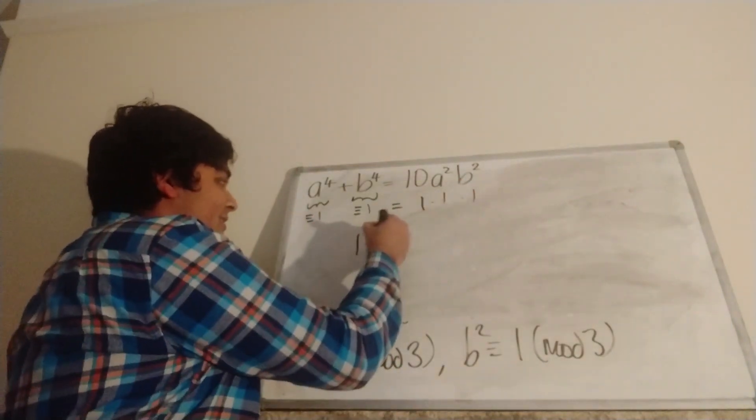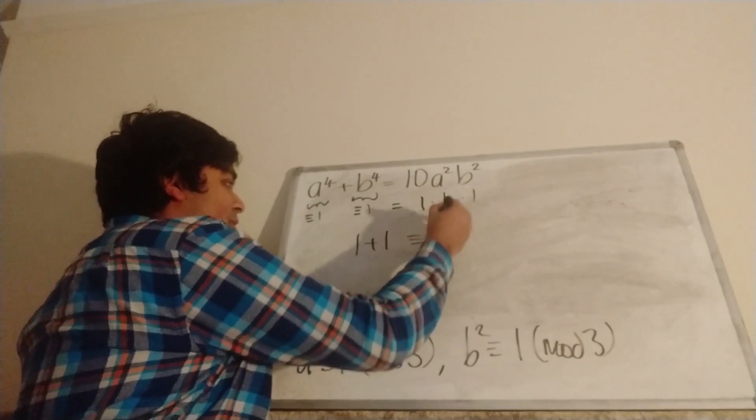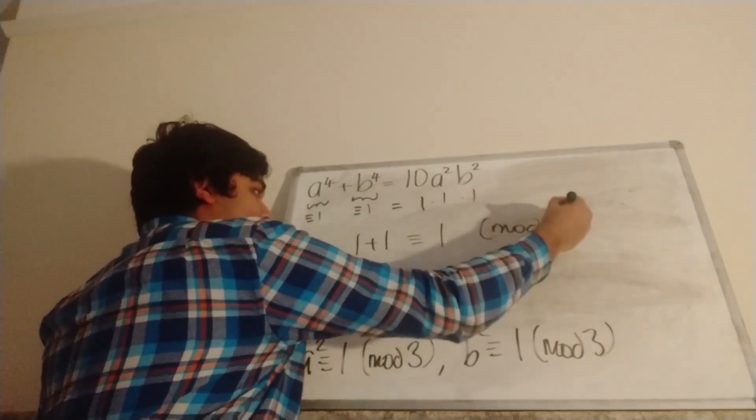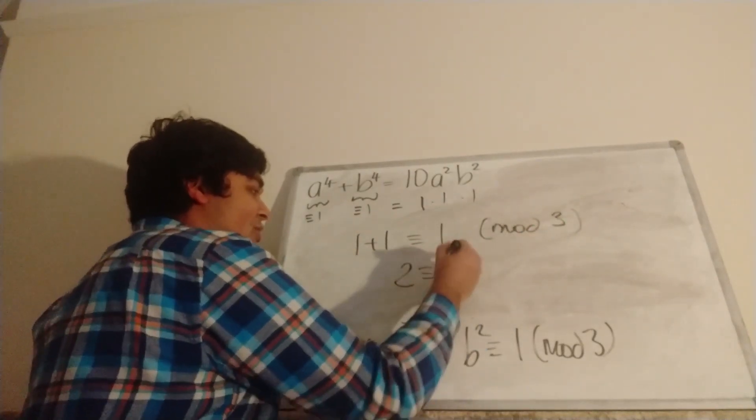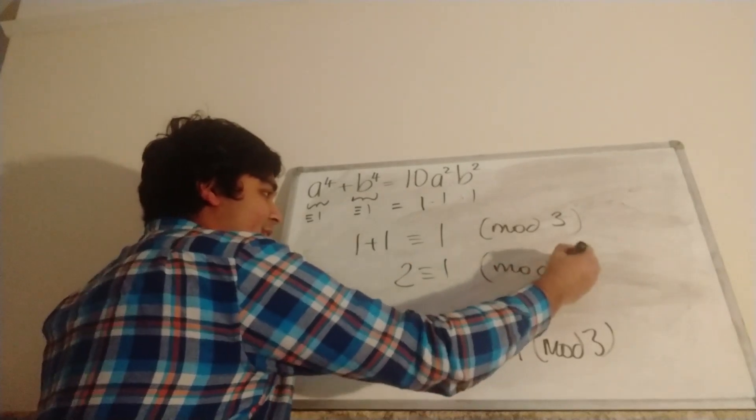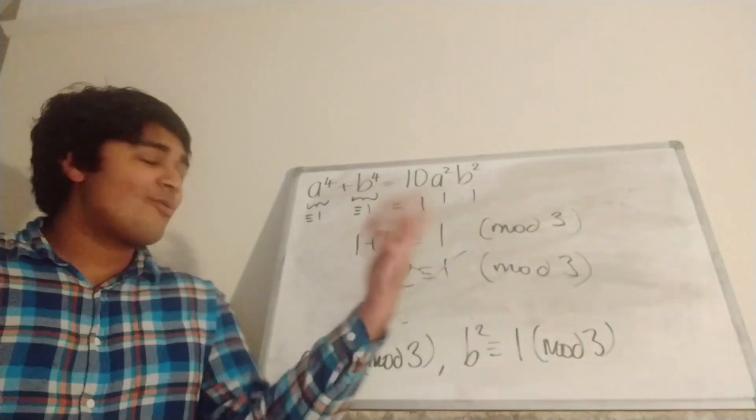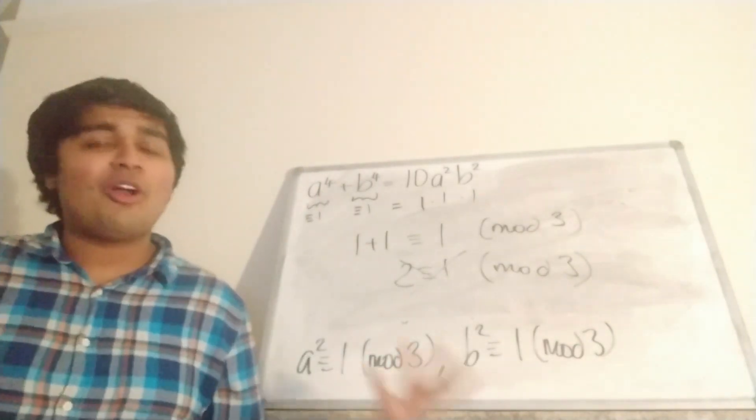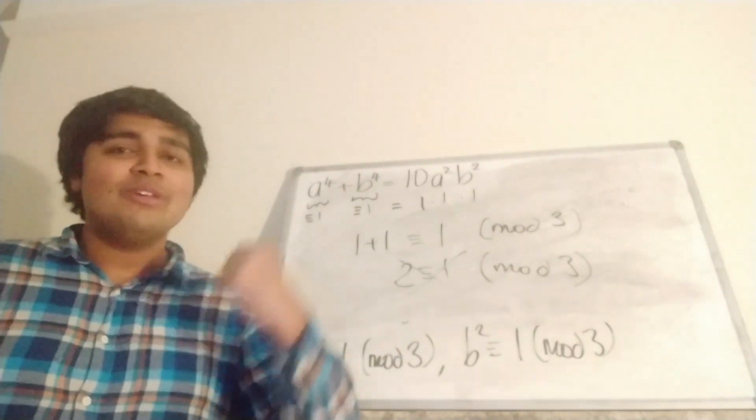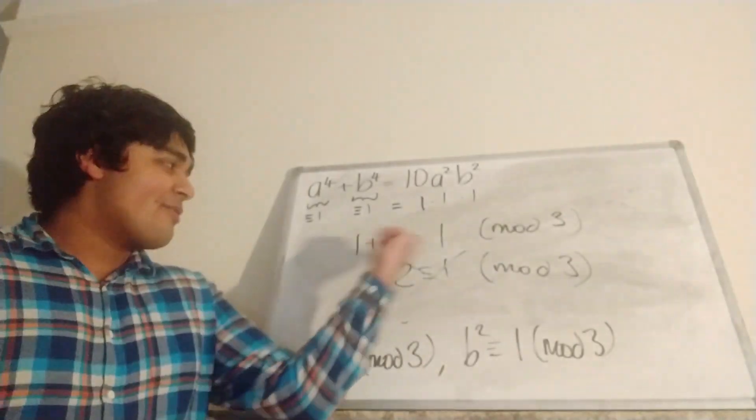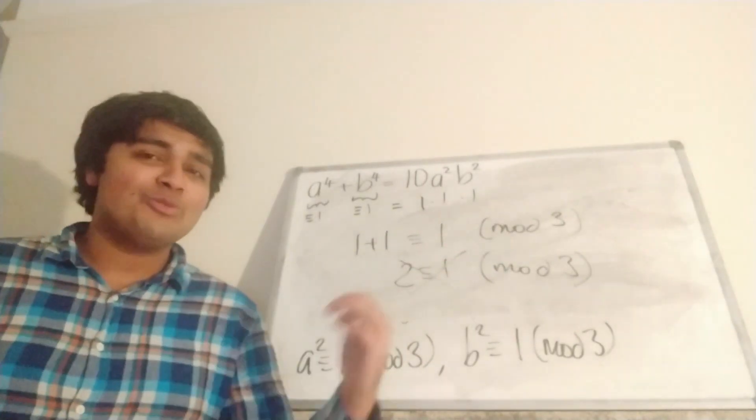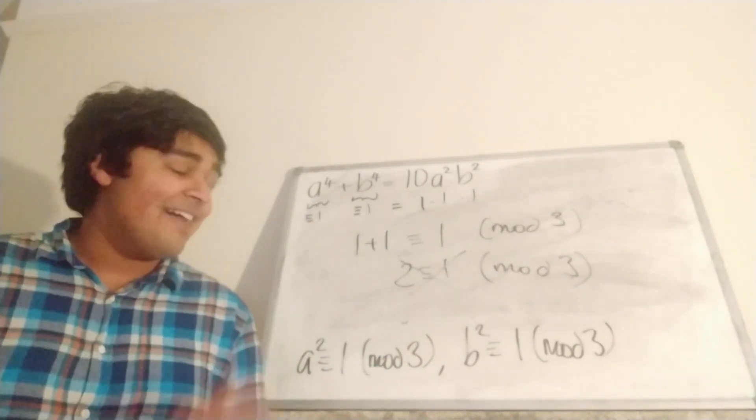So we have on the left-hand side, 1 + 1 is congruent to 1 mod 3, but of course then we get that 2 is congruent to 1 mod 3, and this is certainly not true. So we arrive at our contradiction. So if we go back to the start, what our assumption was is that √2 + √3 is rational, but we arrive at a contradiction, and thus √2 + √3 is irrational. And that ends the proof.